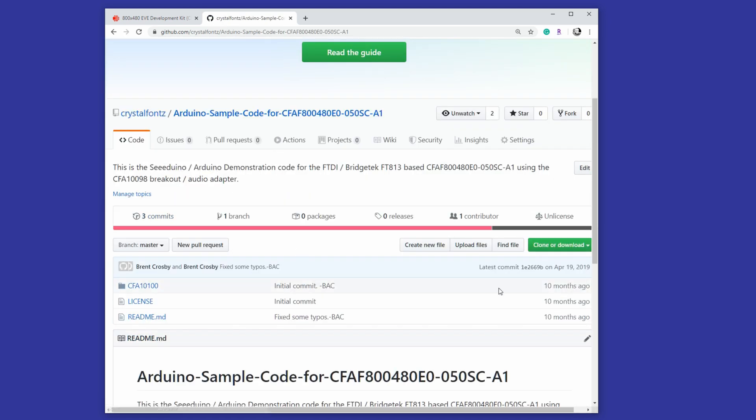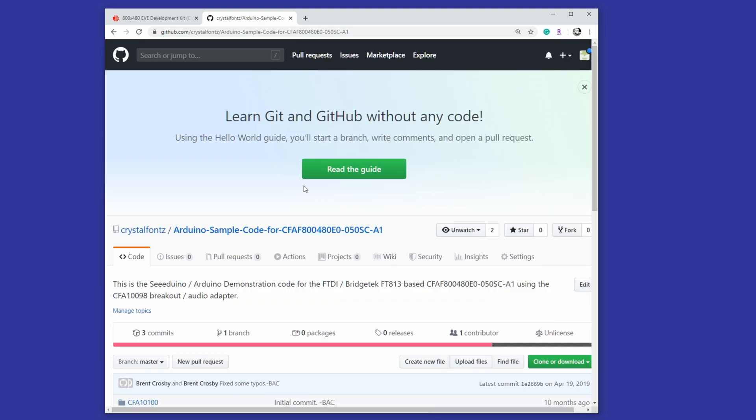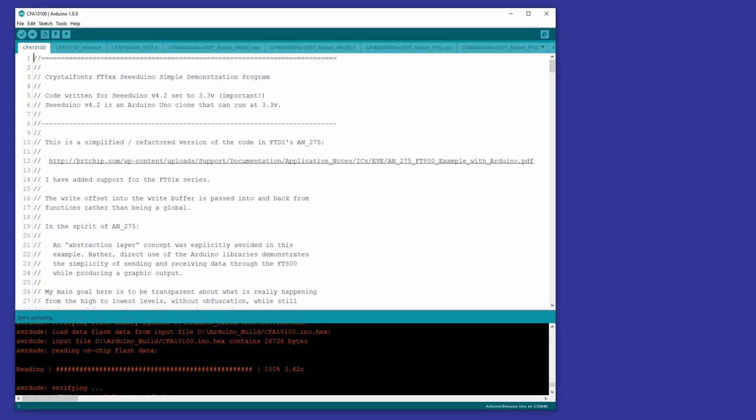Into the Arduino code, basically just do a clone or download. You can download the zip file, which should be the same as what's on from the CrystalFonts site, or you can use the clone functions, the git functions, so you can do pull requests and pushes and all that noise. So now that you got the code on your disk, go ahead and open that up in Arduino.